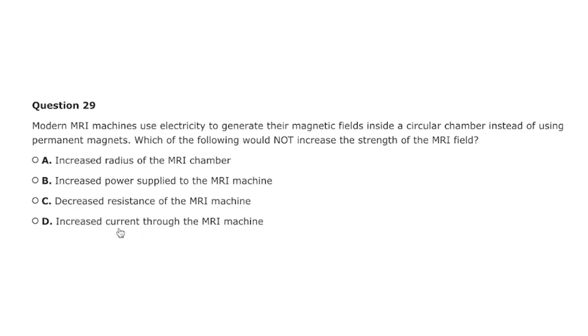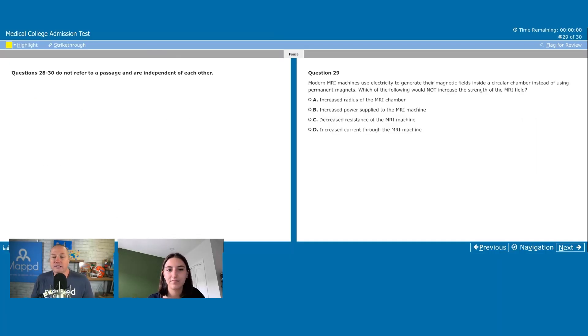All right. Question 29. You can read this one. All right. So modern MRI machine use electricity to generate their magnetic fields inside a circular chamber instead of using permanent magnets, which of the following would not increase the strength of the MRI fields. What are you thinking here, Dr. Gray? What are you focusing on this question? Let's read the answer choices for our podcast listeners. Okay. So your options are going to be increased radius of the MRI chamber, increased power supply to the MRI machine, decreased resistance of the MRI machine, or increased current through the MRI machine.